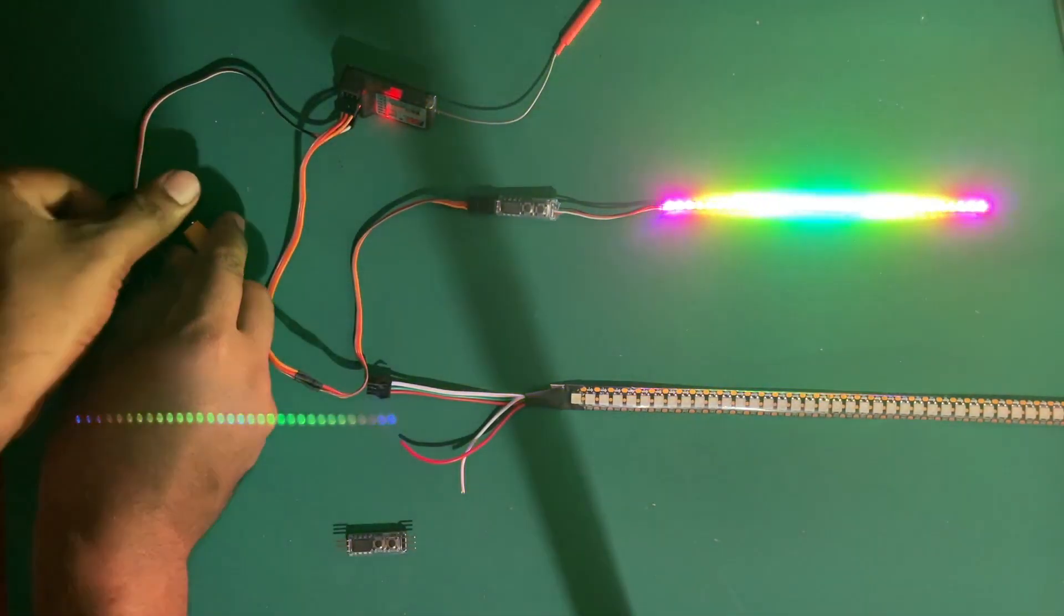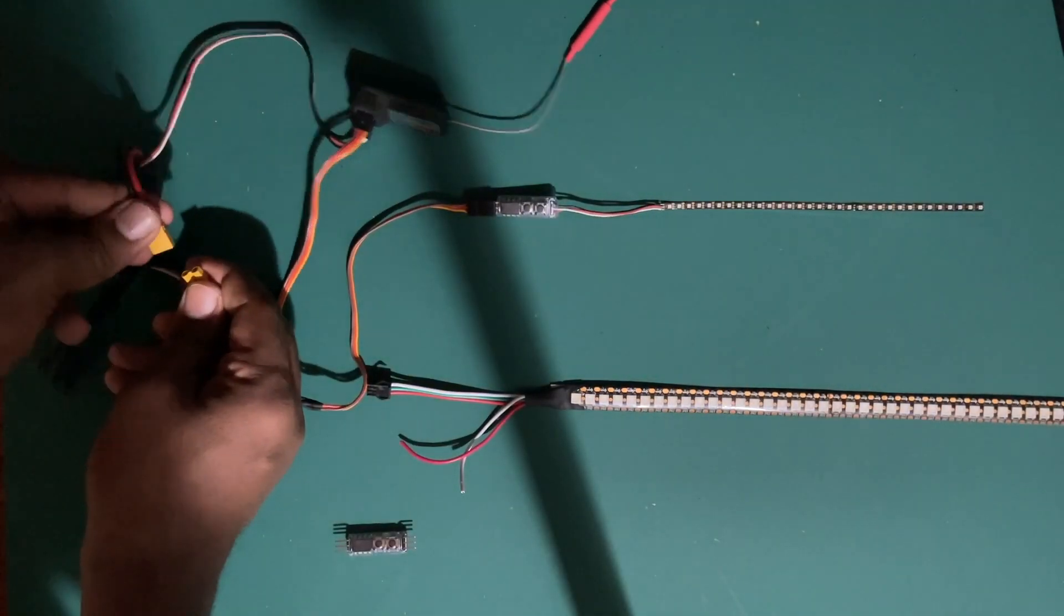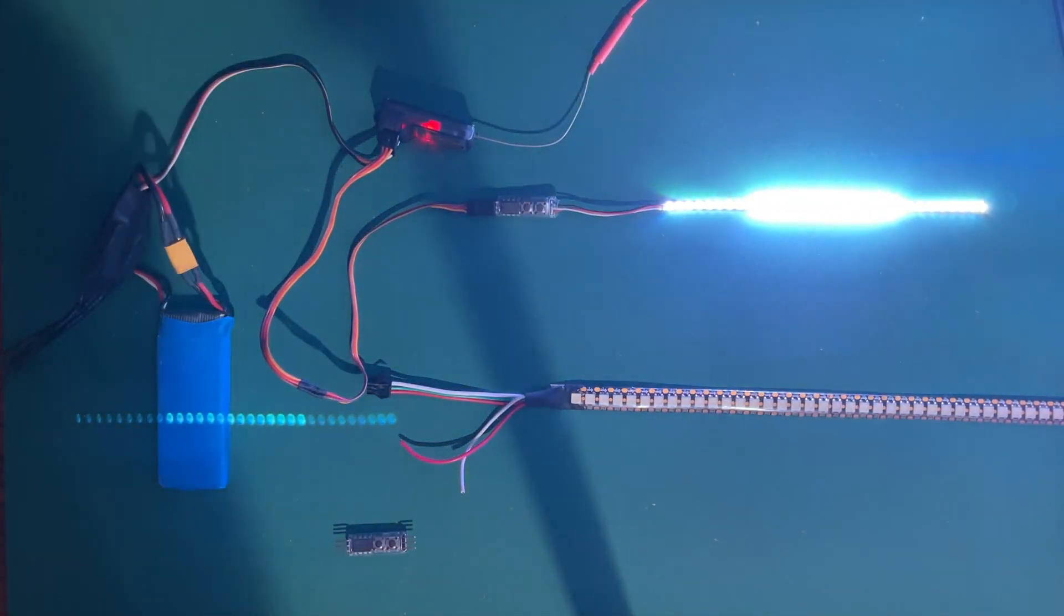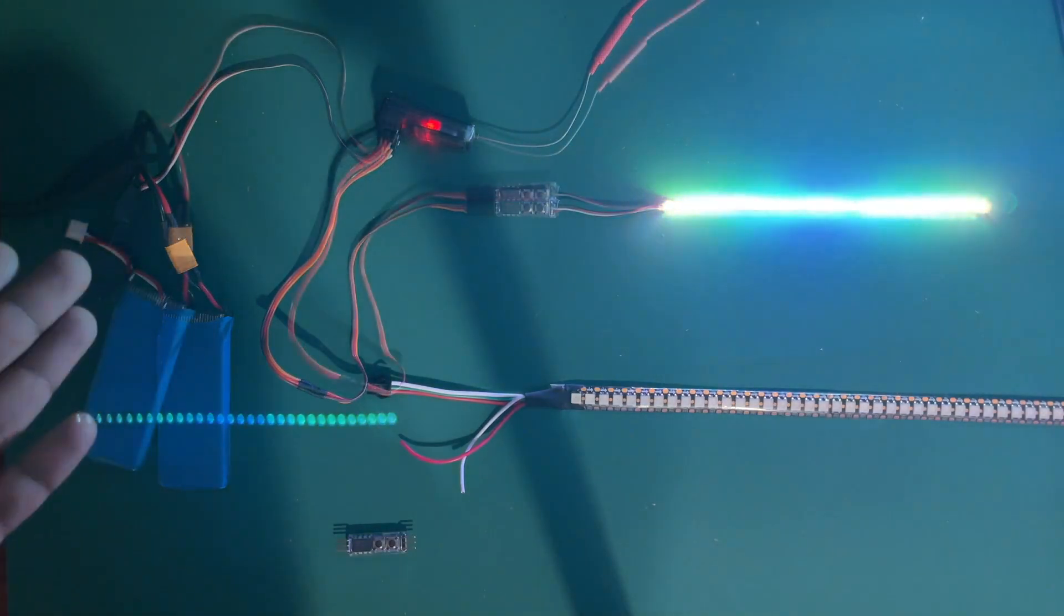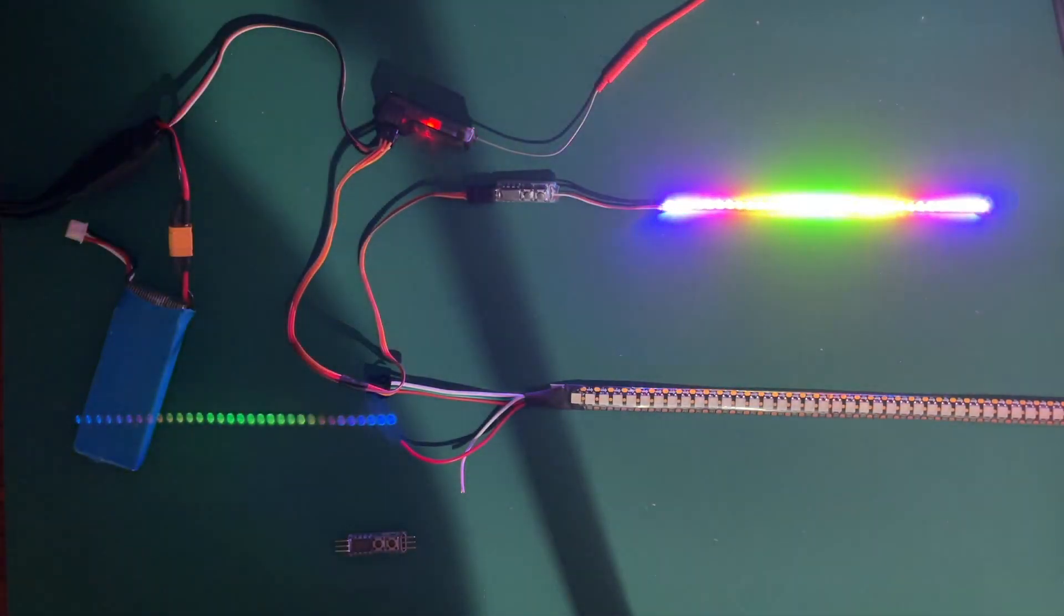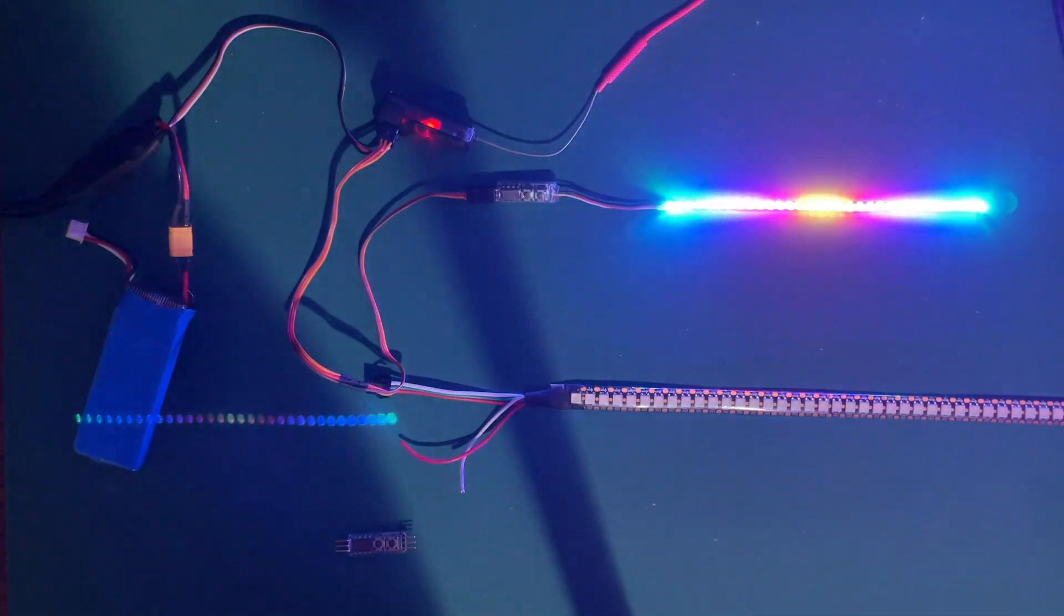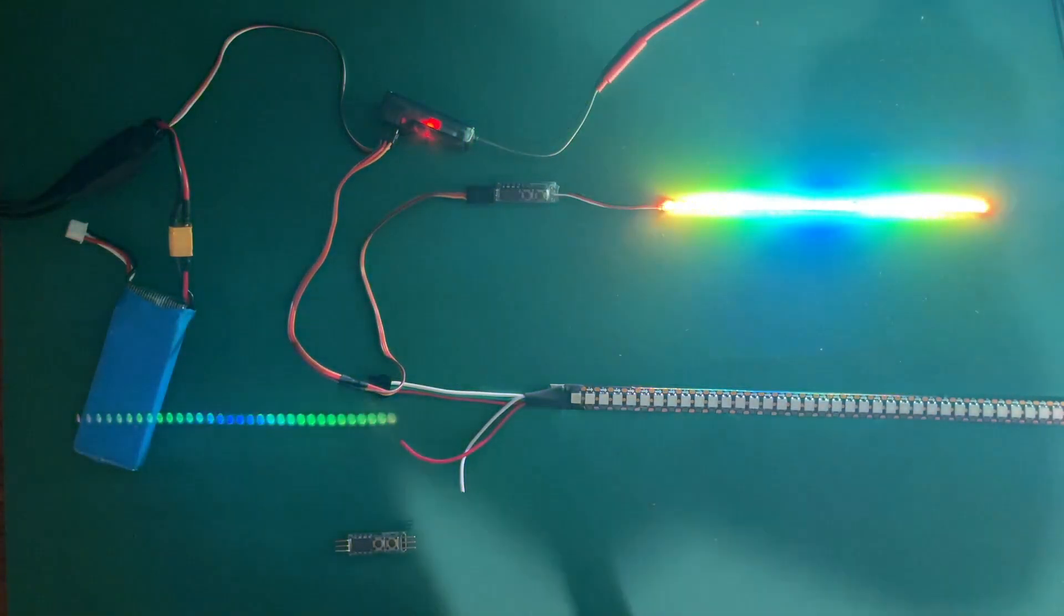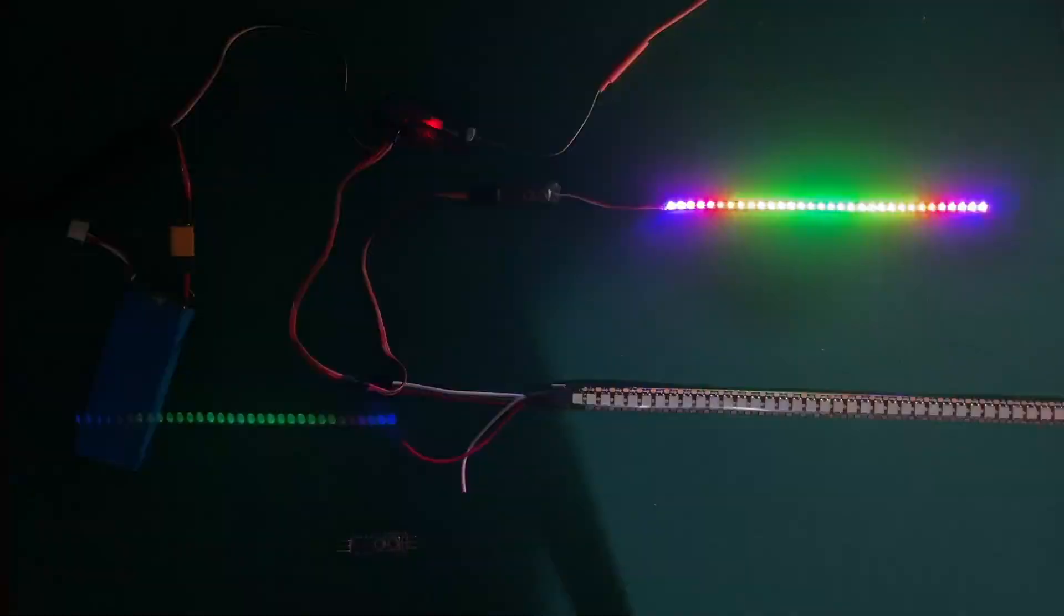So basically we go up and down through the patterns. Say we like this pattern and the last selected pattern is saved in the controller memory. So let me power it off and then power it back. It will do the initial starting animation.